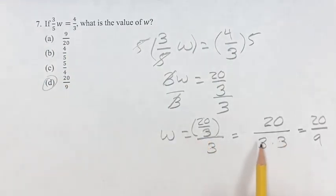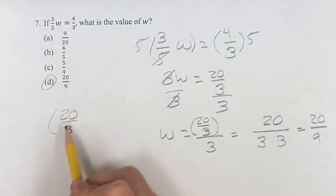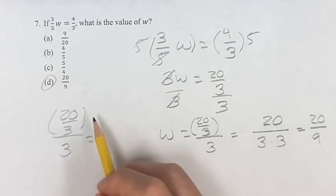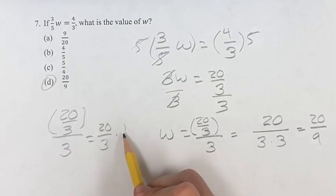If this doesn't make sense to you, that's fine. You can do the thing where you multiply by the reciprocal. So we have 20 over three divided by three. This is equal to 20 over three times the reciprocal of three, which is one third.